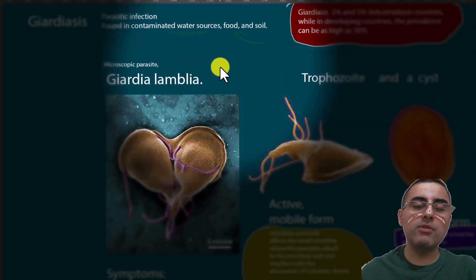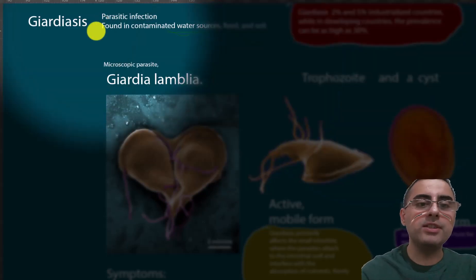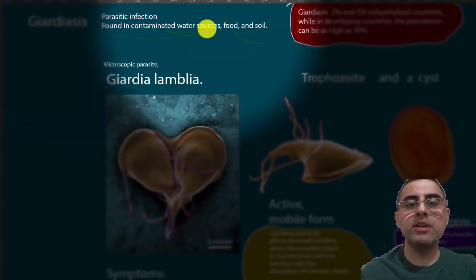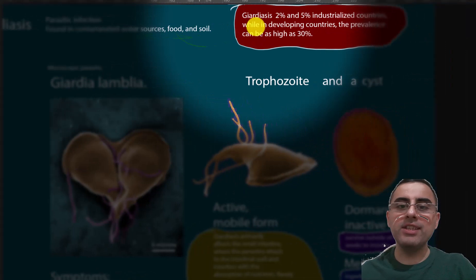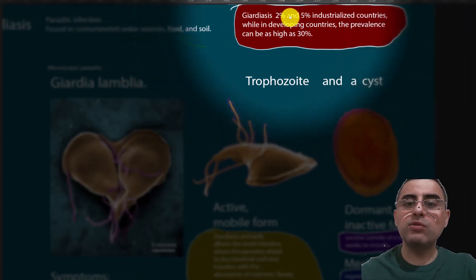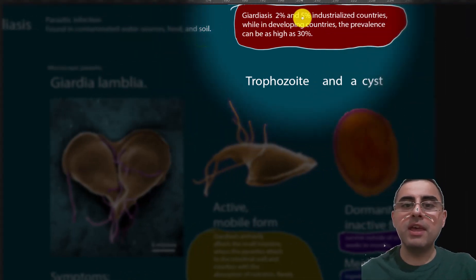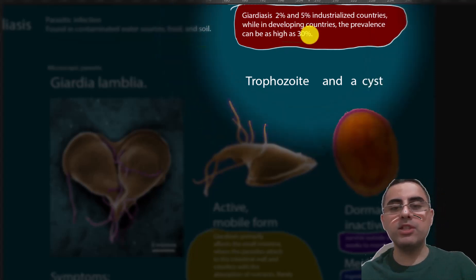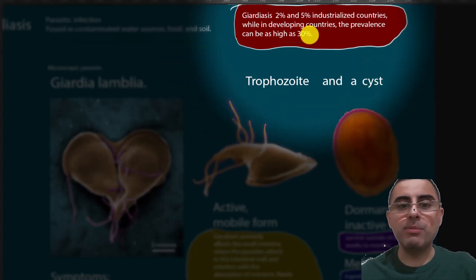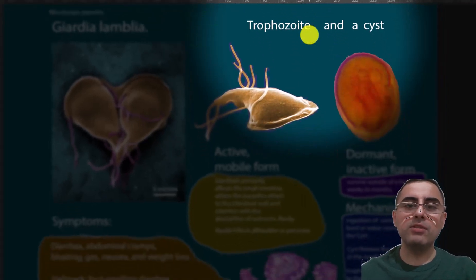Giardiasis is one of the most common parasitic infections. It is found in contaminated water, food, and soil. Giardiasis affects 2–5% of the population in industrialized countries and around 30% of the population in developing countries. Giardiasis has two forms.